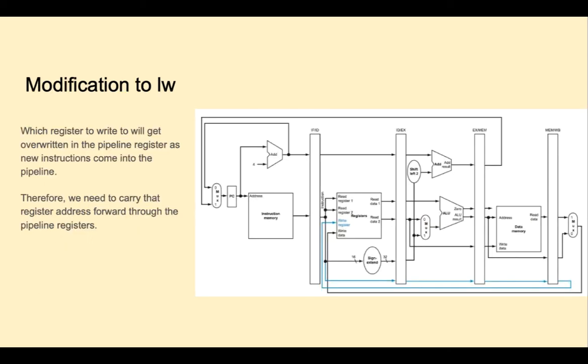Which register we're writing to will get overwritten as new instructions come into the pipeline. Therefore, we're going to need to carry that register address, the destination address, forward through all the pipeline registers. This is shown in the extra blue lines added here.